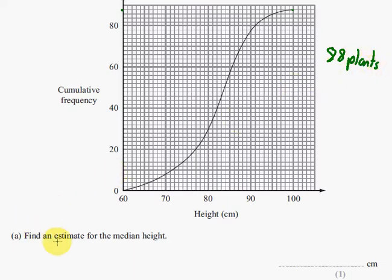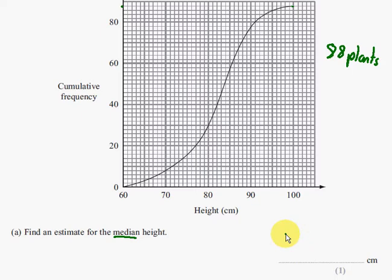So in that case, to estimate the median height, the median is where you put them all in order, and it's going to be the plant that's in the middle. So as there's 88 plants, we need to divide this by 2 to find the middle value. So 88 divided by 2 is 44. So we want to find the height of the 44th plant. Now, as it's going up in 2s, it's here.